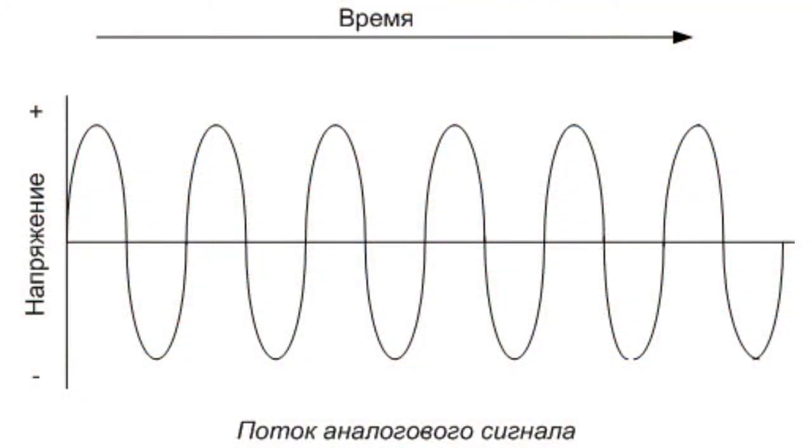The analog signal is a signal that takes an infinite number of arbitrarily close values from a continuous set of values. Unlike digital signals, analog signals are described by continuous functions of time. Therefore, the analog signal is sometimes called a continuous signal.